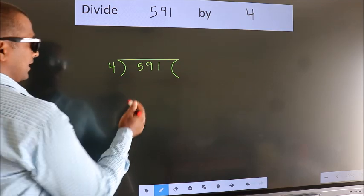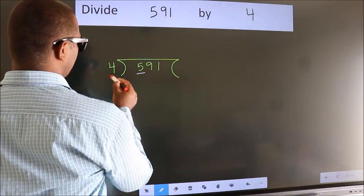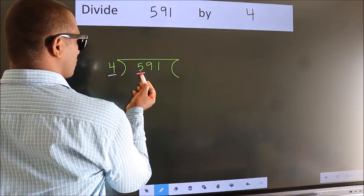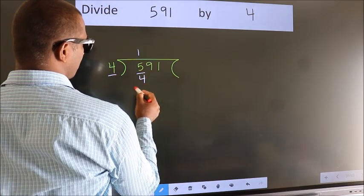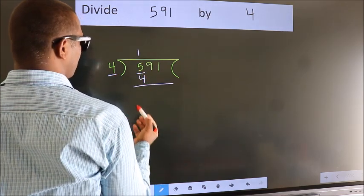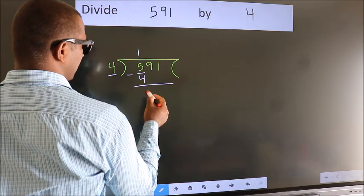Next, here we have 5, here 4. A number close to 5 in the 4 table is 4, once 4. Now we should subtract. We get 1.